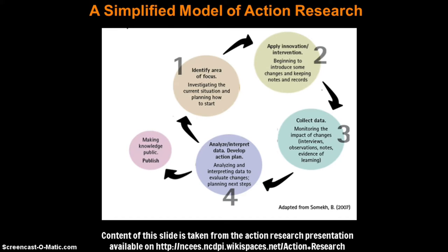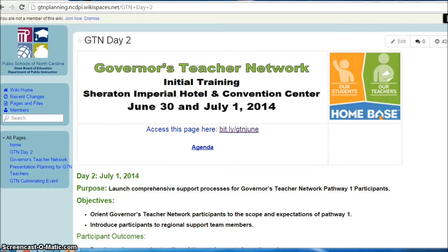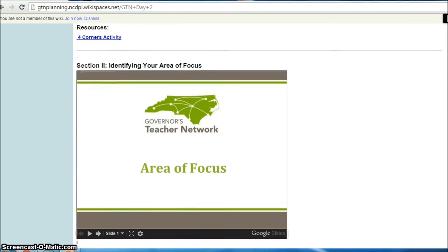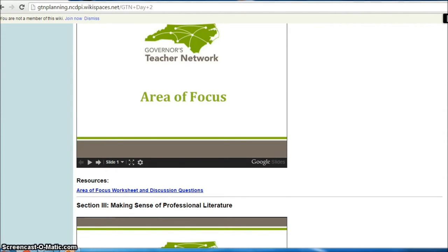Let's take a look at a possible model that we can use to implement action research in our practice. This model can be found in the action research presentation from the Governor's Teachers Network and may help you with next steps. The first step would be to identify your area of focus for your action research. The Governor's Teachers Network has an area of focus worksheet that I think could be very useful for you to adapt to your library media program. On the Governor's Teachers Network initial training wiki, scrolling down to Section 2, Identifying Your Area of Focus, you'll find the area of focus worksheet at the linked resource.